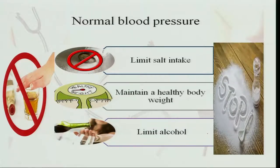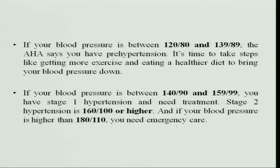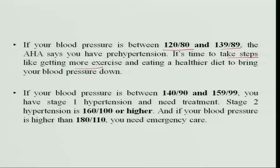Normal blood pressure can be brought back by limiting salt intake, maintaining a healthy body weight, and limiting alcohol. If the blood pressure is between 120/80 and 139/89, the American Heart Association says it is a prehypertensive stage, and you should be very careful. This is the time to take steps — more exercise and eating a healthier diet — to bring blood pressure down.